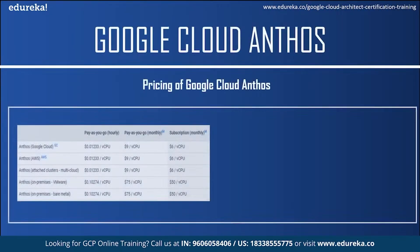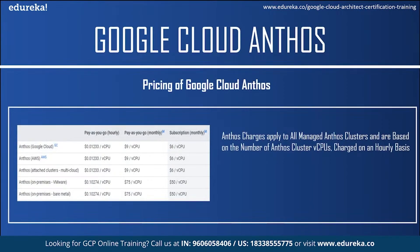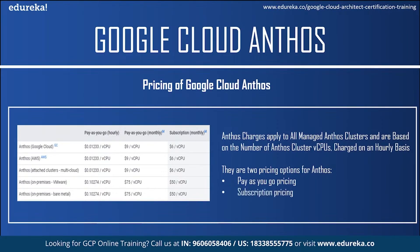Let us take a look at the pricing of Anthos. Anthos charges apply to all managed Anthos clusters and are based on the number of Anthos cluster virtual CPUs charged on an hourly basis. There are two types of pricing options. The first is pay-as-you-go pricing where you are billed for Anthos managed clusters as you use them — ideal if you want to try Google Anthos or use it infrequently. The next type is subscription pricing which provides a discounted price for a committed term, covering all Anthos deployments irrespective of environment.